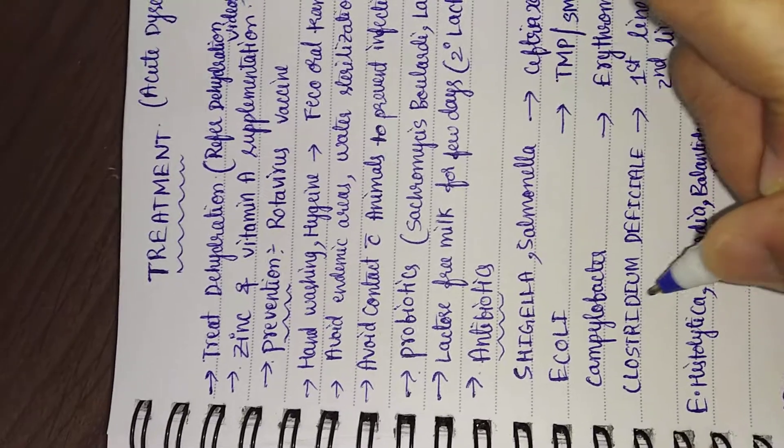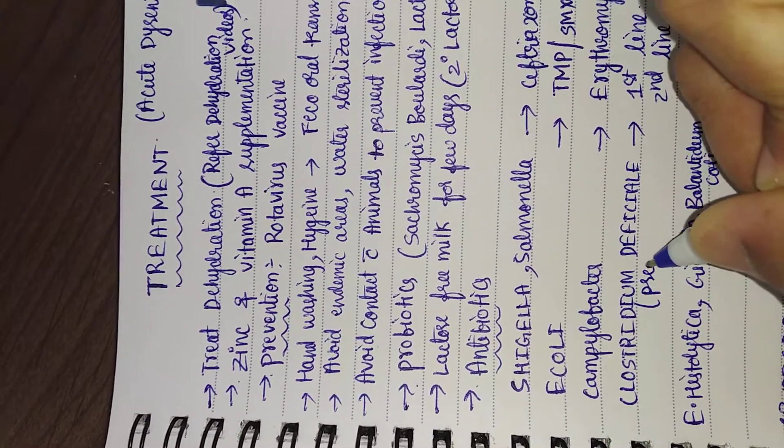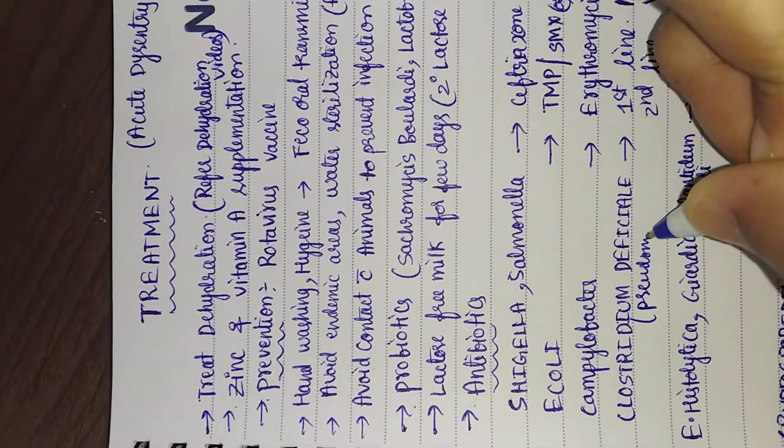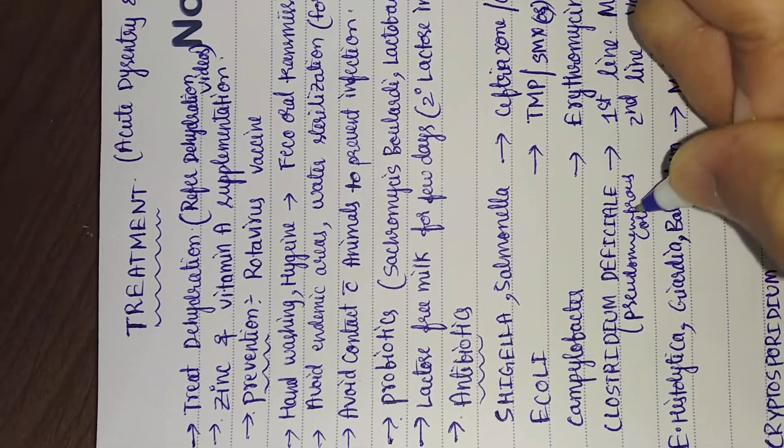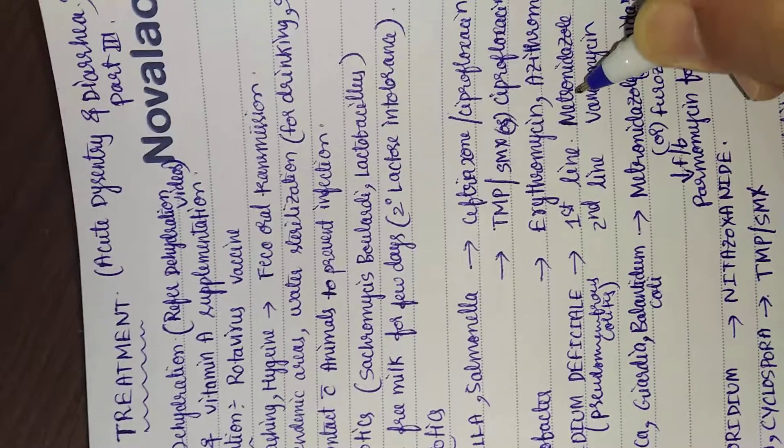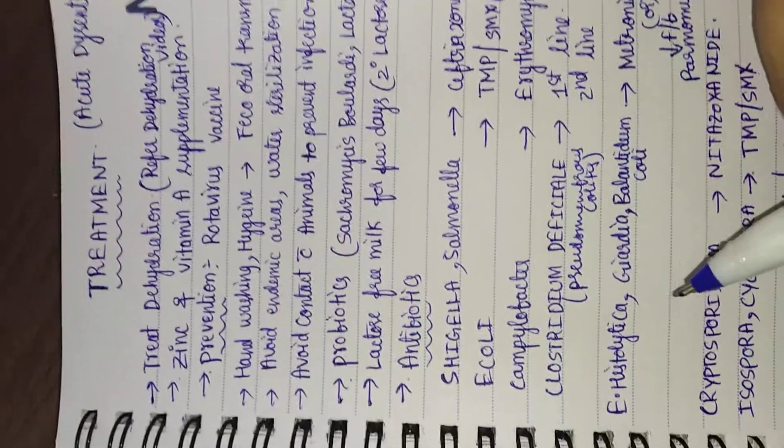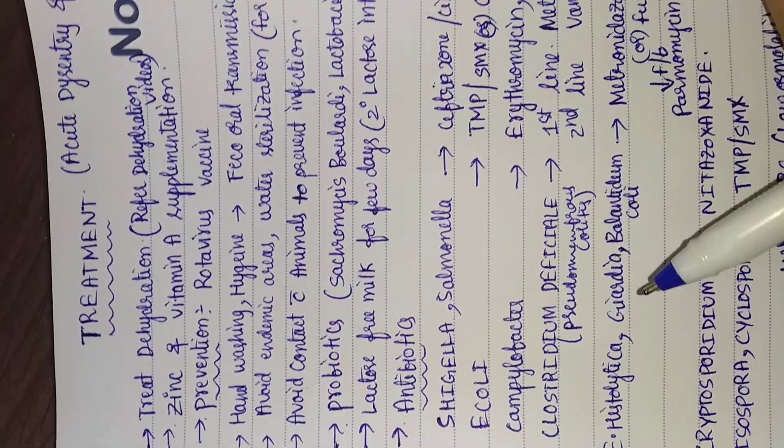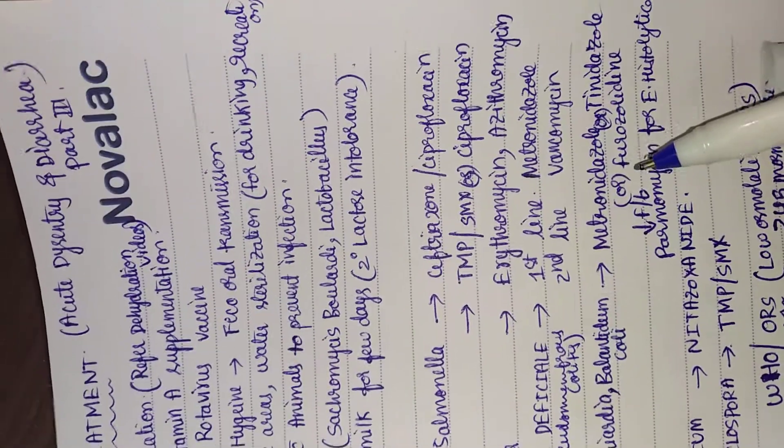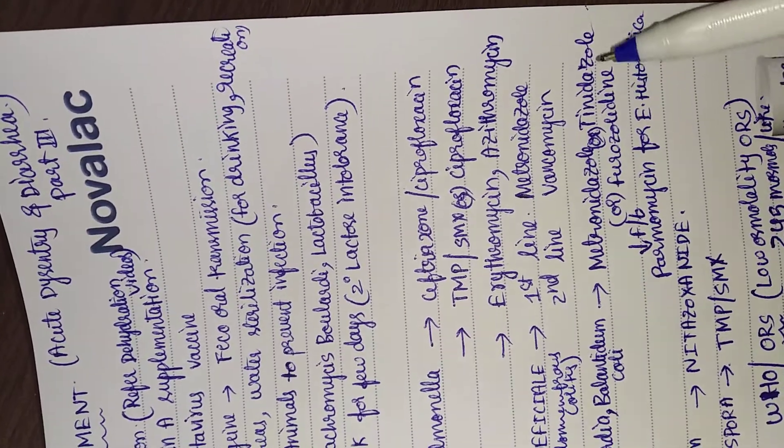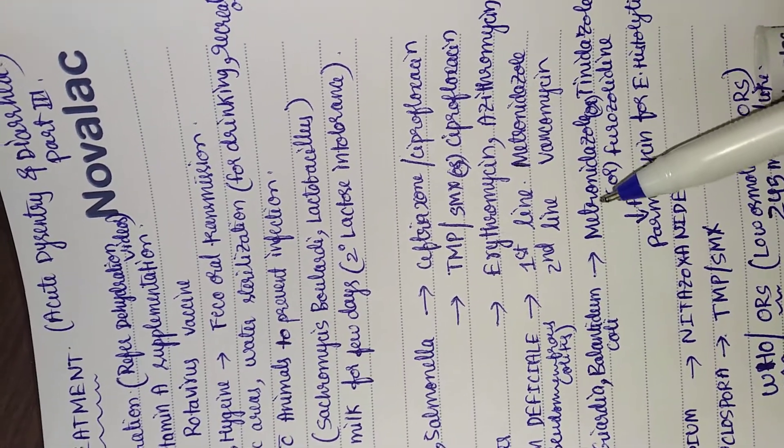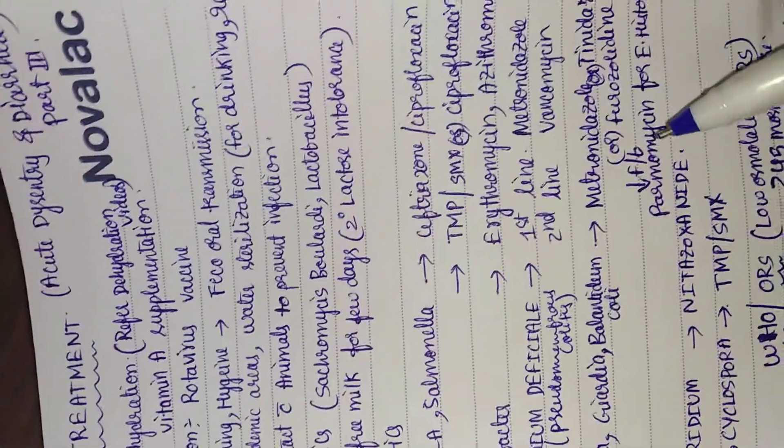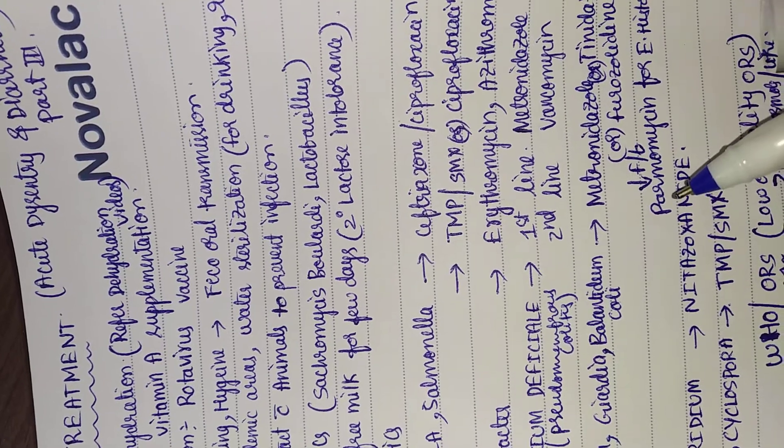This causes pseudomembranous colitis. For this, the first line is metronidazole, second line is vancomycin. For Entamoeba histolytica and Giardia, metronidazole, tinidazole, or furazolidone. For Entamoeba histolytica, after giving metronidazole, you should also give a course of paromomycin.